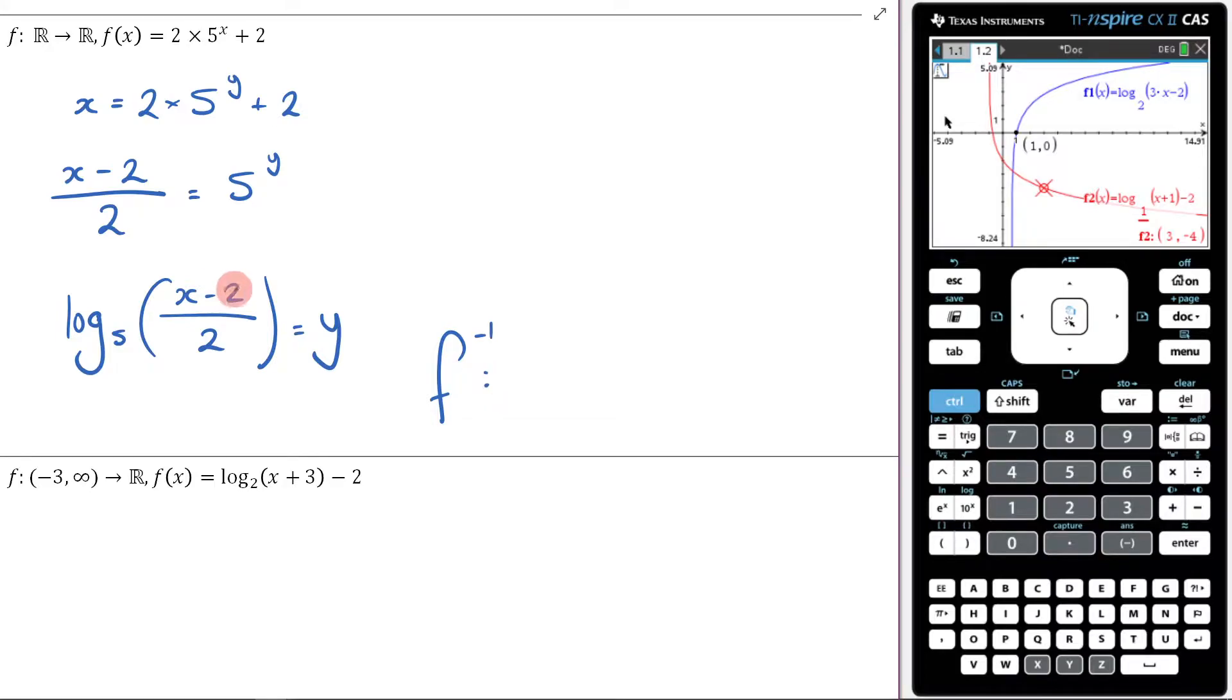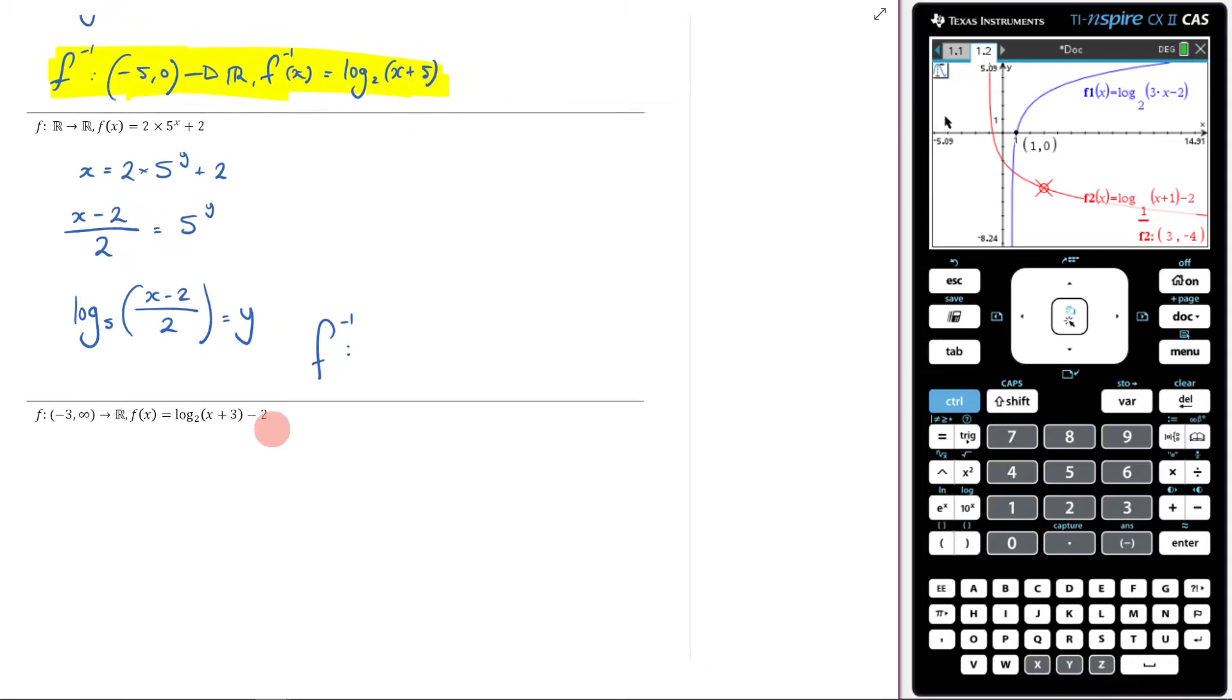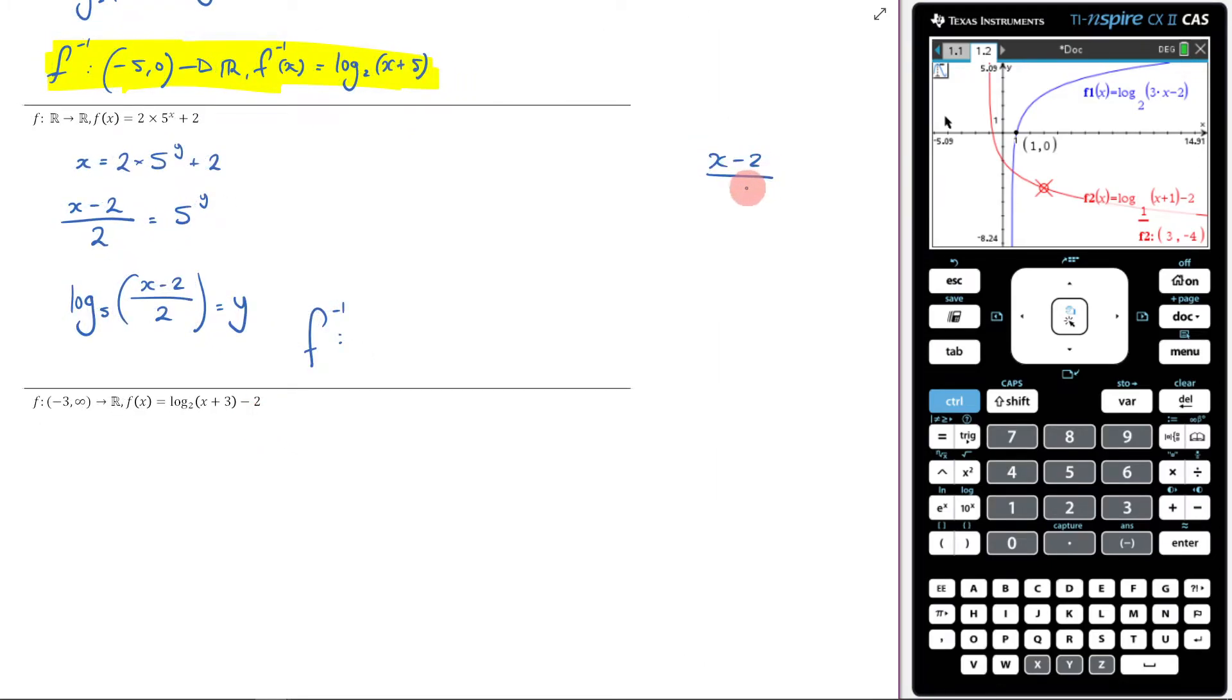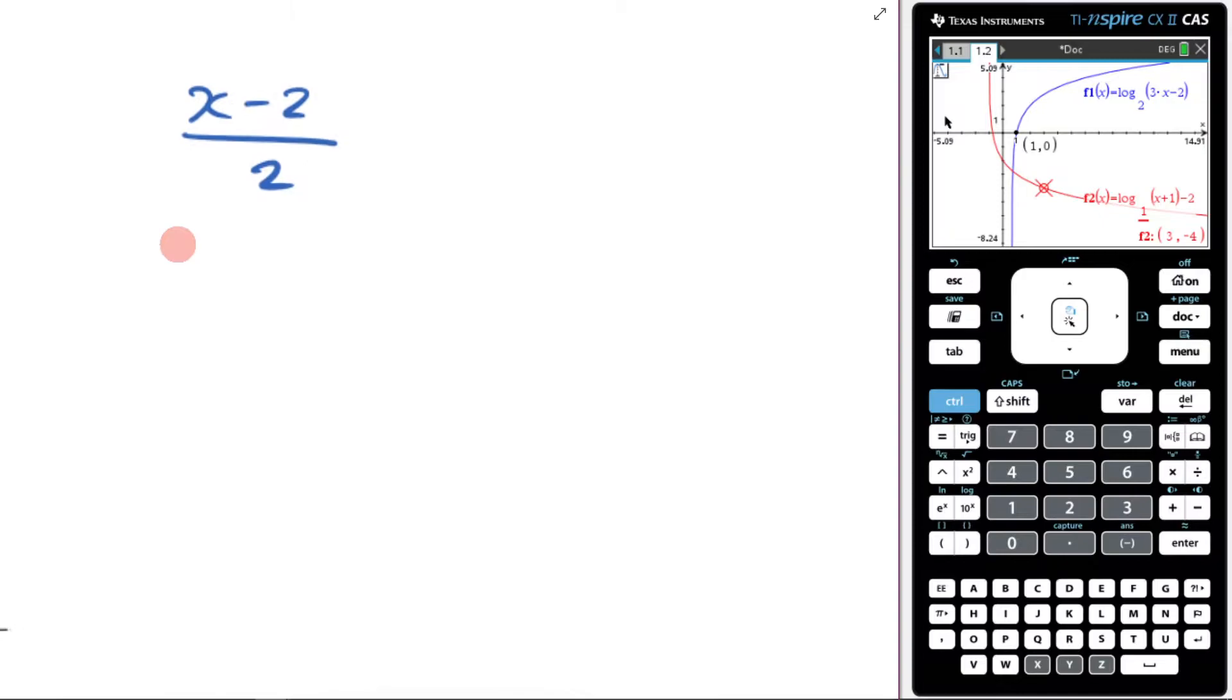Again, a couple different ways you can do this. You can look at this and say, where will this thing, well let's think about it. Let's come over here. I've got x minus 2 over 2. Don't write this down, let's just think about this. We know that this has to be greater than 0, right, because my argument can't be 0 or negative.